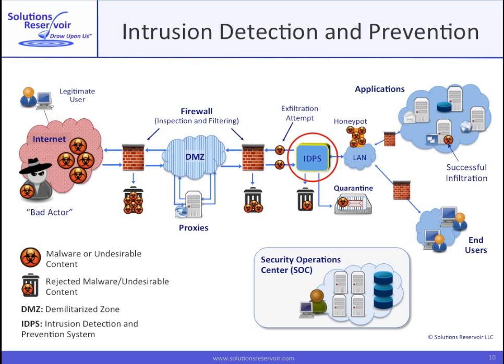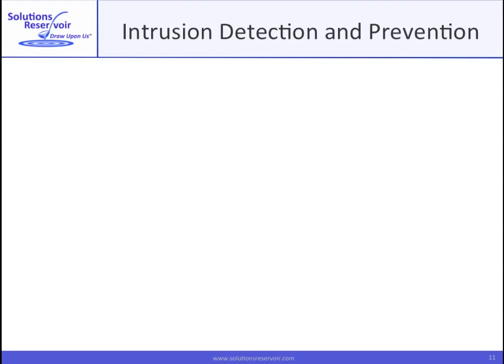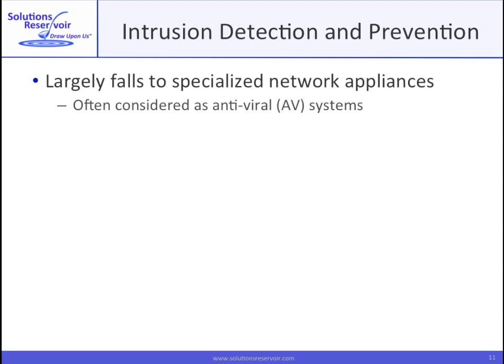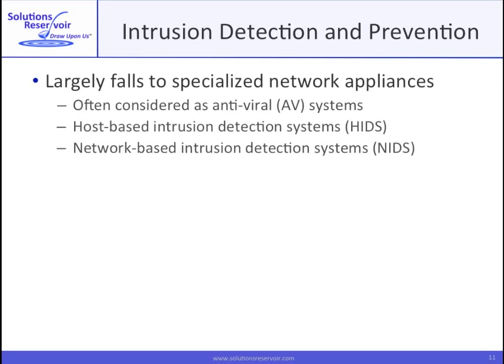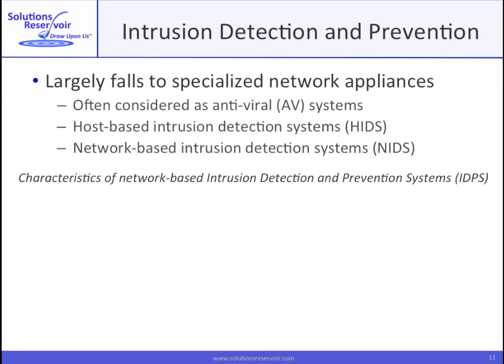Powerful intrusion detection and prevention systems, or IDPS, are the backbone of cyber defense. We'll cover them in this section, as well as the important concepts of signatures and sandboxes. IDPS are specialized network appliances that can be considered as antiviral systems. They fall into two types — network-based and host-based — that are very different in scale. Your PC running AV software is a host system, a HIDs. Let's look at the characteristics of network-based systems, NIDs.